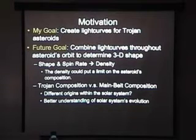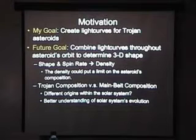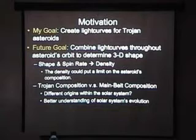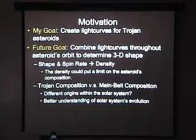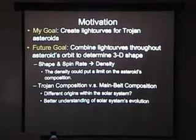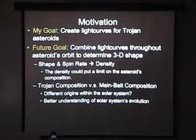The shape is interesting because if you know the shape and the spin rate of the asteroid, you can determine the asteroid's density. And if the density is known, you can obtain a limit on the composition, and compare the composition of these Trojan asteroids to the composition of the main belt asteroids. If they're different, someone could theorize that these groups originated from different parts of the solar system, giving us a better understanding of how our solar system evolved.